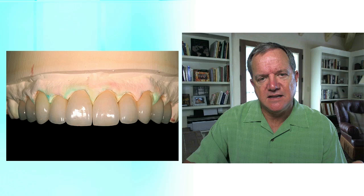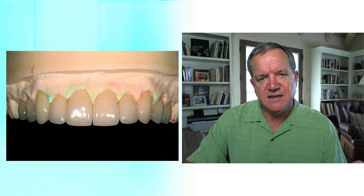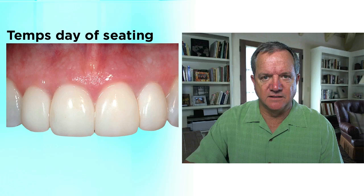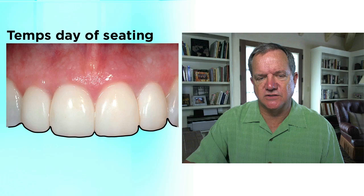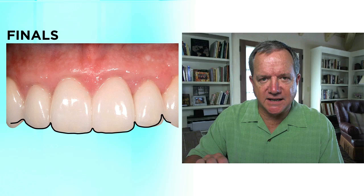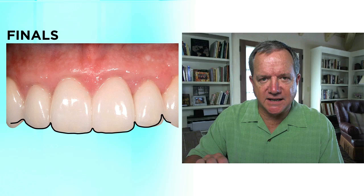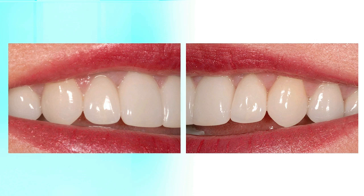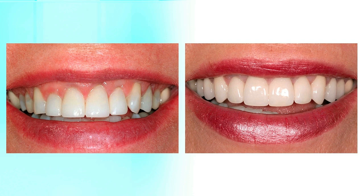When the case comes back and we're ready to go to the mouth, if it was done into that silicone index and I know I like the temporary, I'm confident everything is going to be right where it's supposed to be. I drew a line along the incisal edges and incisal embrasures on the temporaries at the day of seating, and then showed the finals after cementation — it demonstrates how closely the technician can replicate the temporaries using that silicone index. It may be a few tenths of a millimeter either way, but it's always within the range of acceptability. Here's the before and after with the final result.